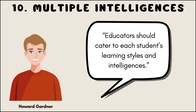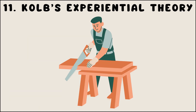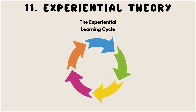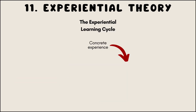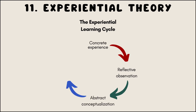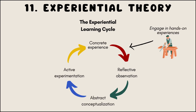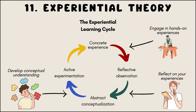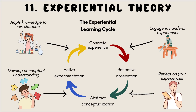Kolb's experiential theory emphasizes the importance of experience in the learning process. It suggests that learning occurs through a cycle of concrete experience, reflective observation, abstract conceptualization, and active experimentation. Kolb's theory encourages learners to engage in hands-on experiences, reflect on those experiences, develop conceptual understanding, and apply their newfound knowledge to new situations.